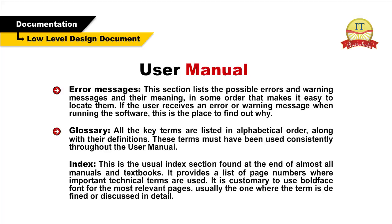Glossary — all the key terms are listed in alphabetical order, along with their definitions. These terms must have been used consistently throughout the user manual. Index — this is the usual index section found at the end of almost all manuals and textbooks. It provides a list of page numbers where important technical terms are used. It is customary to use boldface font for the most relevant pages, usually the one where the term is defined or discussed in detail.